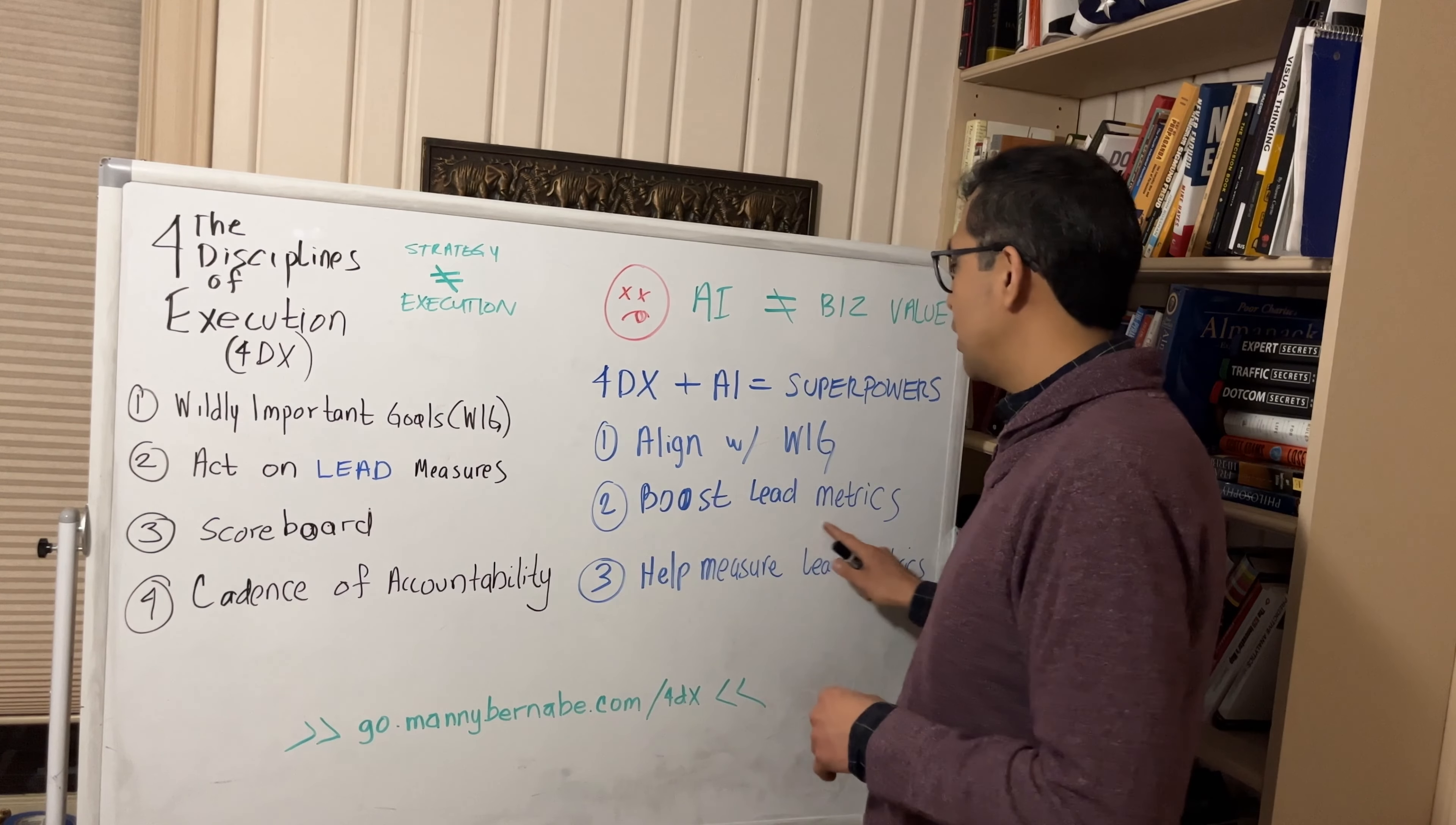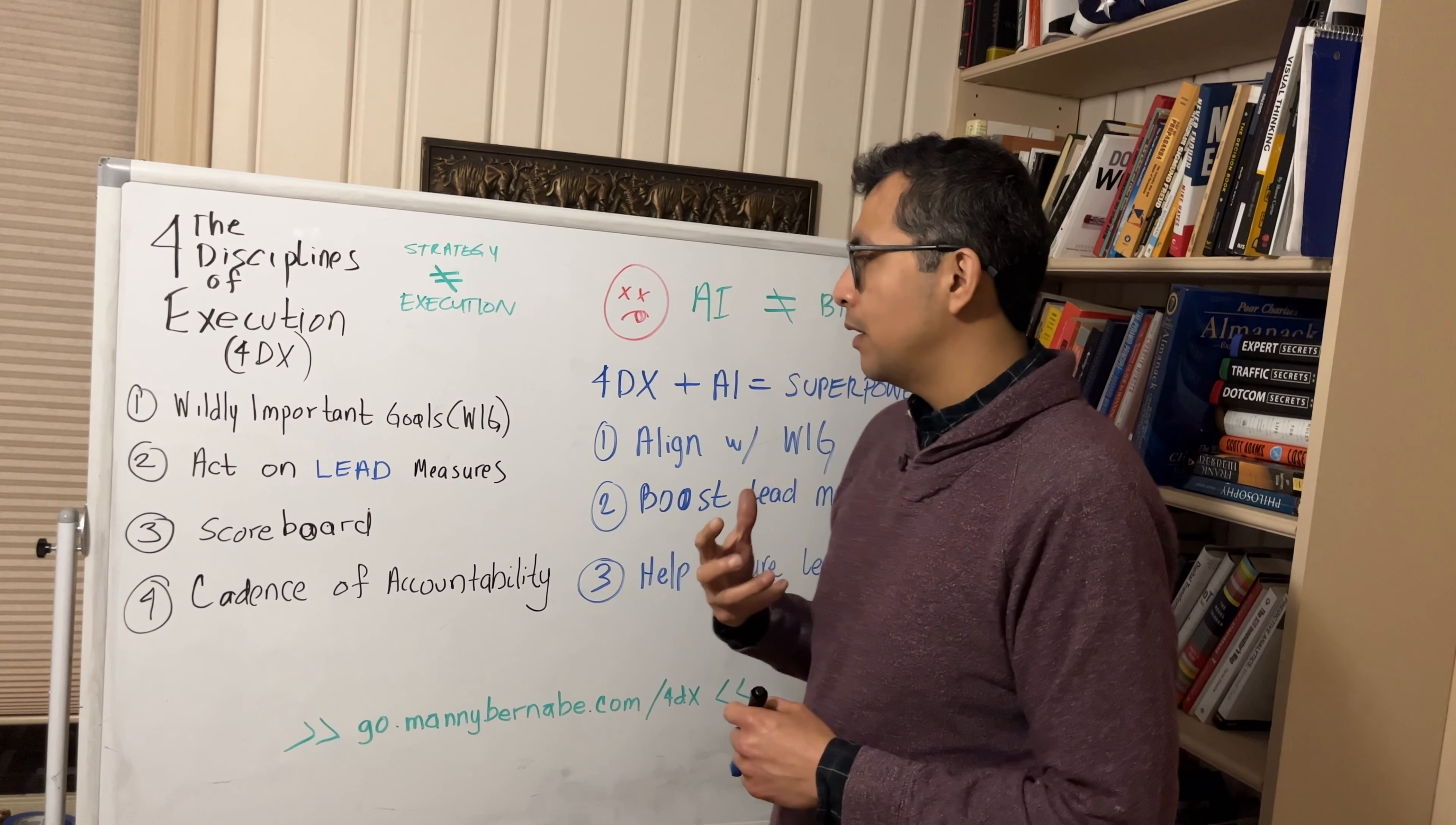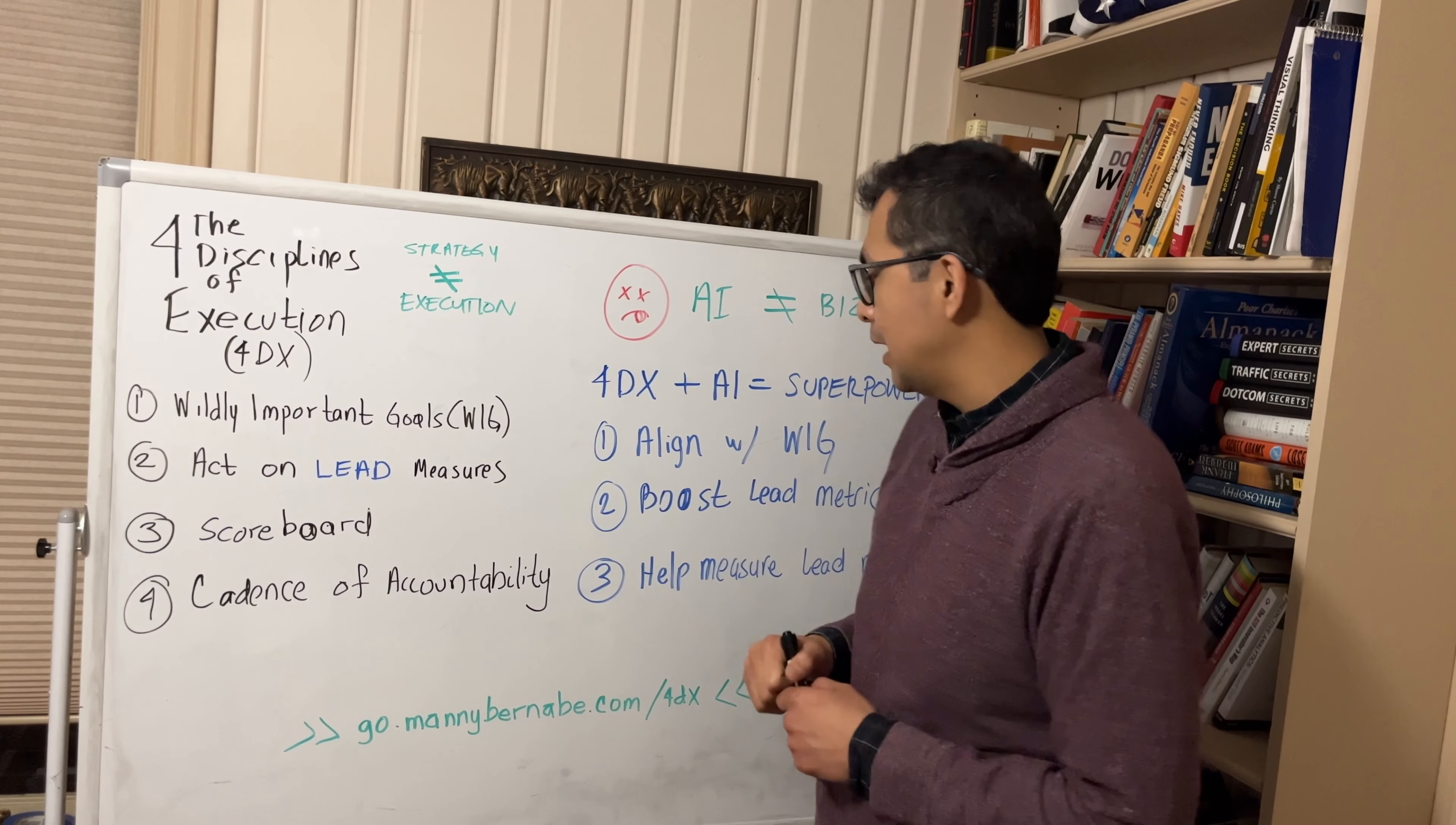Concept number two here is around helping to boost these lead metrics. As I mentioned, the lead metrics are where you're going to have the maximum amount of leverage in terms of getting to your goals. So if you can leverage AI and machine learning models to help boost these lead metrics, any group that is using this framework is going to be very happy to work with you. So aligning the outputs of your AI projects so that they boost the overall lead metrics.